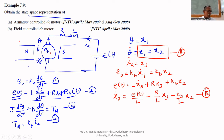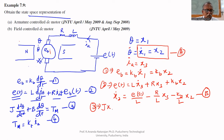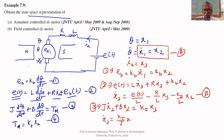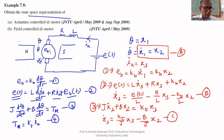We have to find X2_dot. From the mechanical equation: J times X2_dot plus B times X2 equals T_m, and T_m equals K_T times I_A equals K_T times X3. Therefore, X2_dot equals (K_T/J)X3 minus (B/J)X2. We now have three first-order equations to put into state space form.